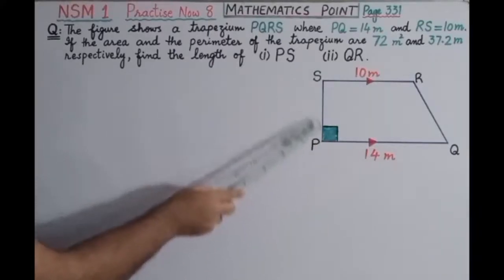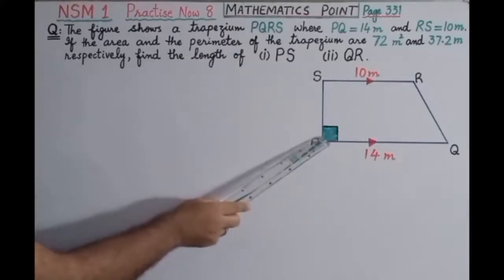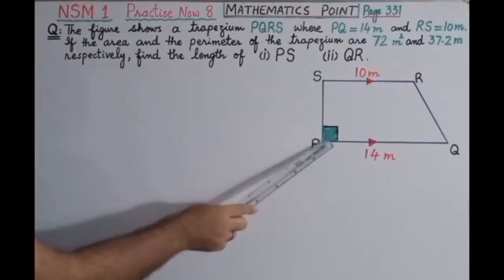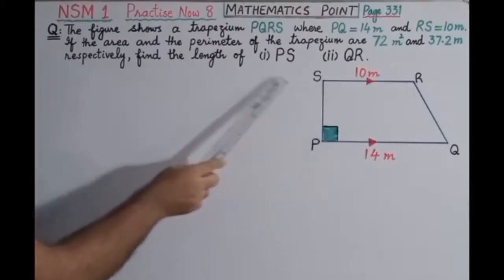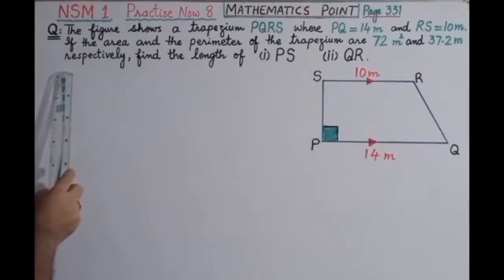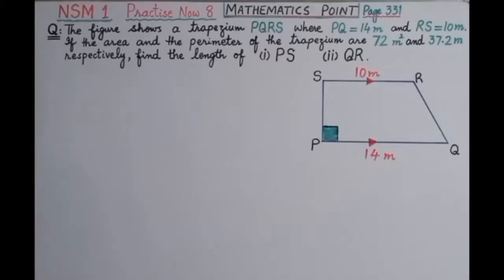First we will find the length PS, which is also perpendicular — that is, it is the height. By using the formula: area of trapezium is equal to half multiplied by the sum of the lengths of the parallel sides, multiplied by the height.